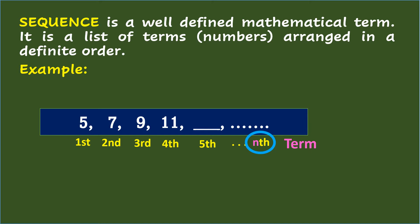The value of the term is represented by a sub 1, which is equivalent to 5 for the first term; a sub 2 with the value of 7 for the second term; a sub 3, which has the value of 9; a sub 4 with the value of 11; a sub 5 for the value which is still missing; and so on, represented by a sub n.